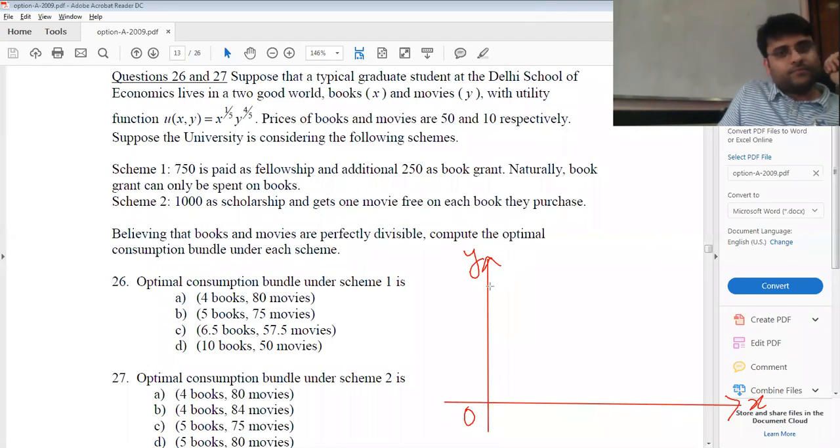The usual case would have been 1000 equals 50X plus 10Y. So this is the usual budget line. But there is a restriction on our particular budget line. Our particular budget line means X to be greater than or equal to 5. So for our particular budget line, it won't be like this. It will start from 5.